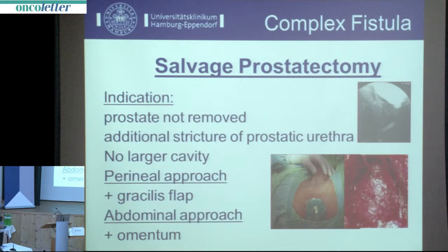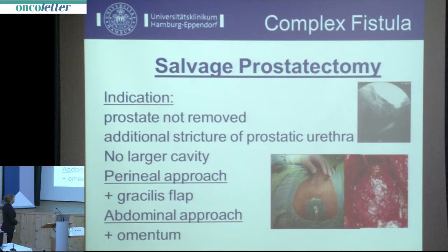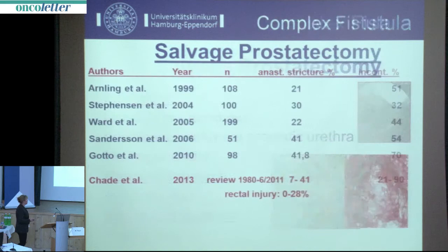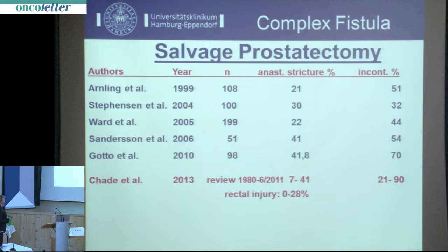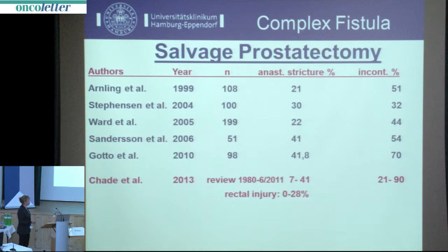What are the indications for salvage prostatectomy? These are patients whose prostate was not removed and who have a complete stricture of the prostatic urethra, but with no larger cavity formation. In these cases, a perineal approach with a gracilis flap is recommended; if using an abdominal approach, the omentum should be used for interposition. The complication rate is high: the incidence of rectal injury during salvage prostatectomy is up to one-third, anastomotic stricture 7 to 41 percent, and there is a high rate of incontinence requiring secondary artificial urinary sphincter implantation.